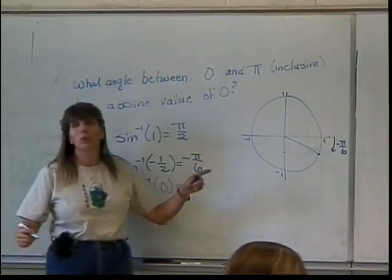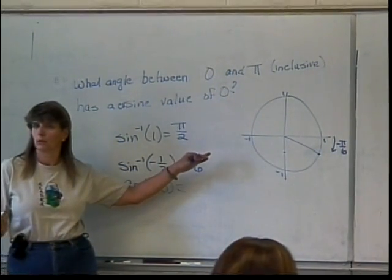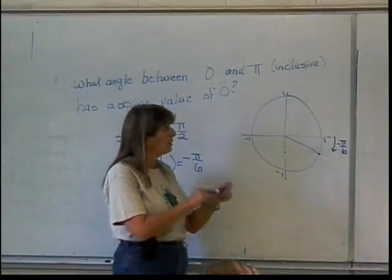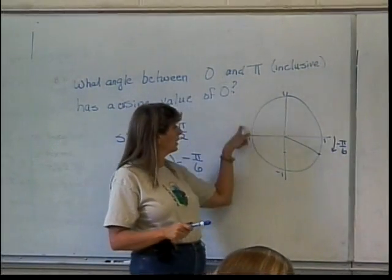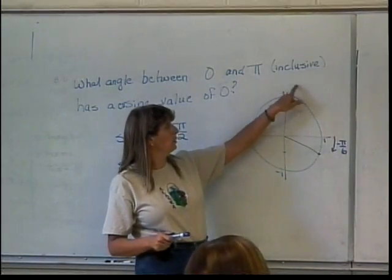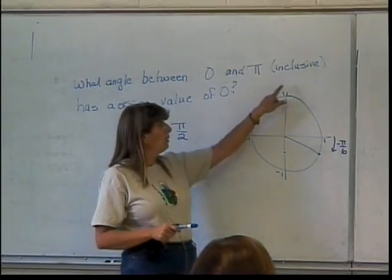So where is, the cosine value is which coordinate on the unit circle? The x-coordinate. So, as I'm working my way from here over to here, where do I run into an x-coordinate of 0? Pi over 2. And pi over 2.